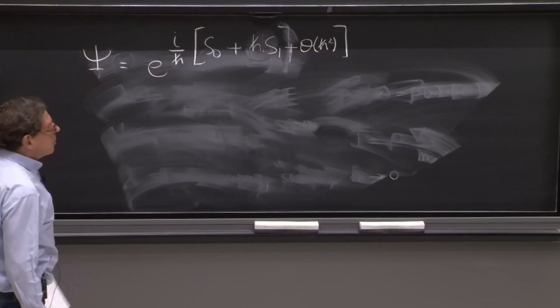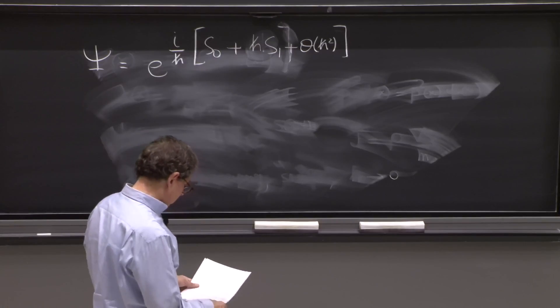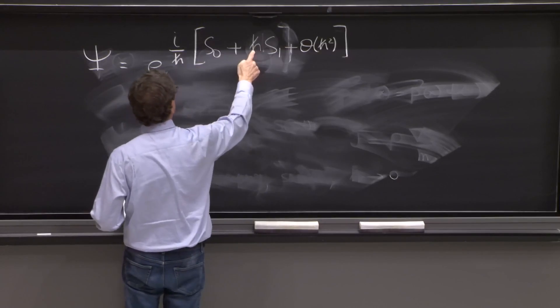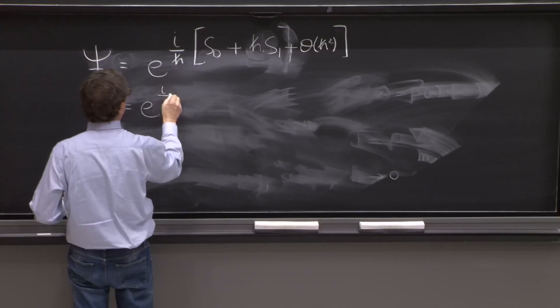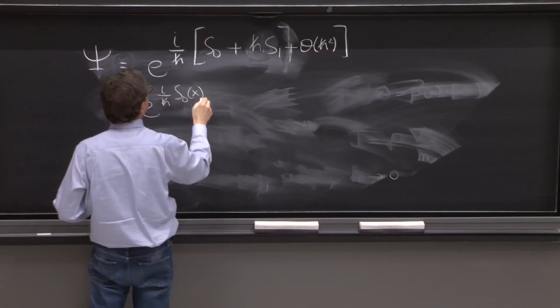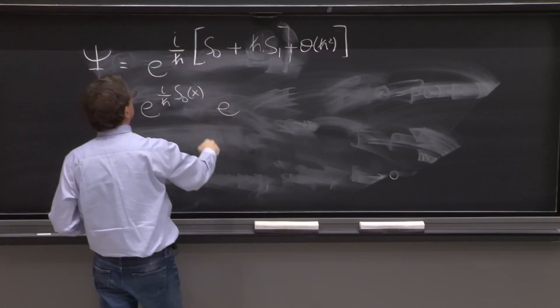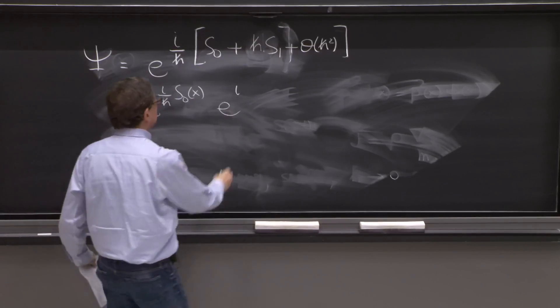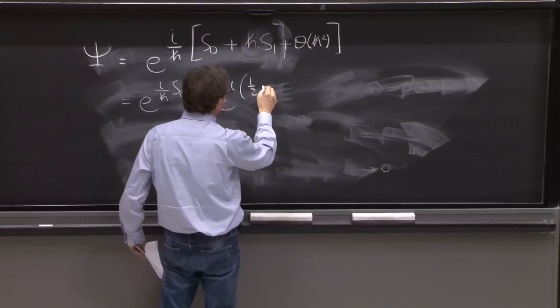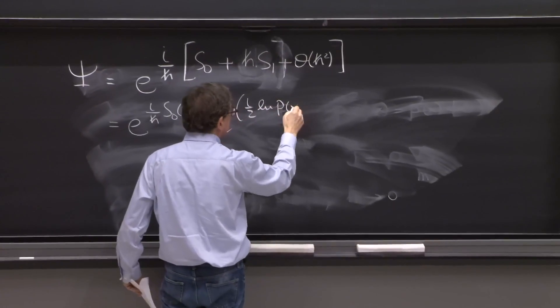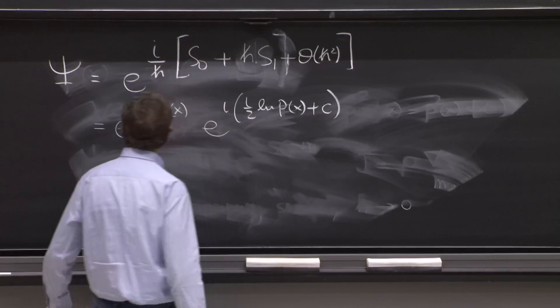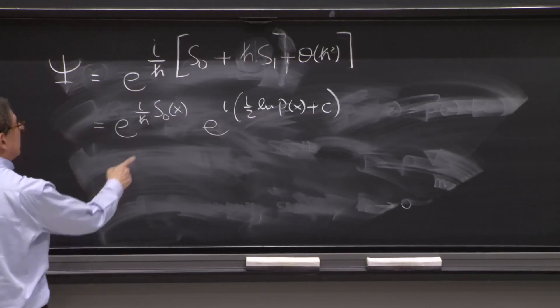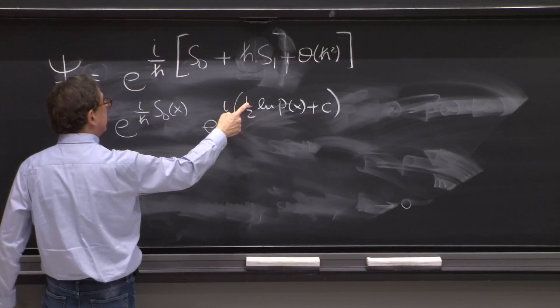So what do we have here? I'll write it. This term is kind of interesting. We have e to the i over h bar s0 of x times e to the i s1. And s1 was i over 2 log of p of x plus a constant. So look at this. i times i is minus 1 over 2.